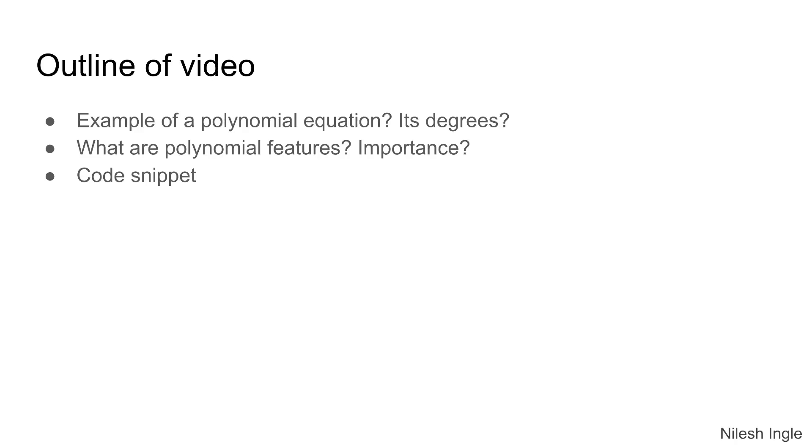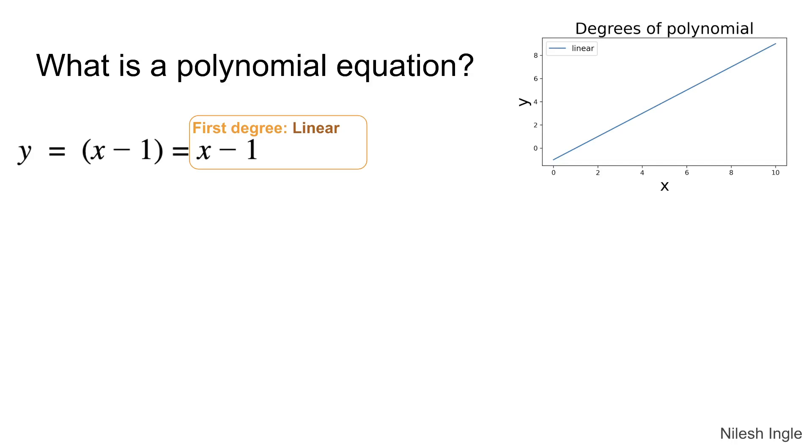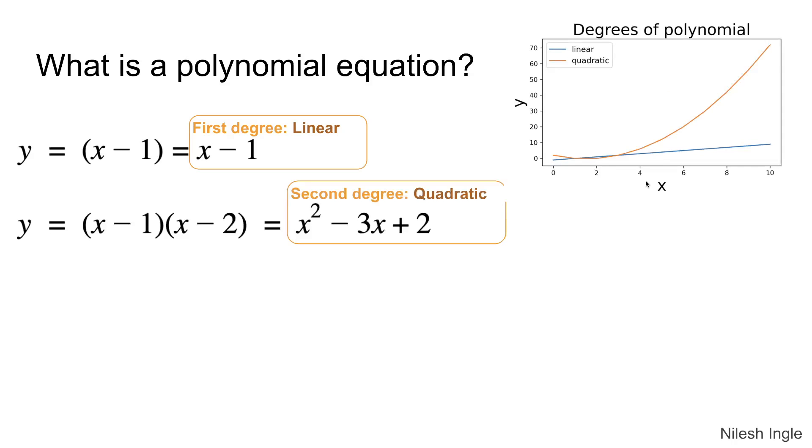Finally we'll look at a code snippet before getting into Jupyter Notebook to do the actual coding. So what is a polynomial equation? You probably already know as shown here we have a linear equation where y equals x minus one and here there is a plot for that.